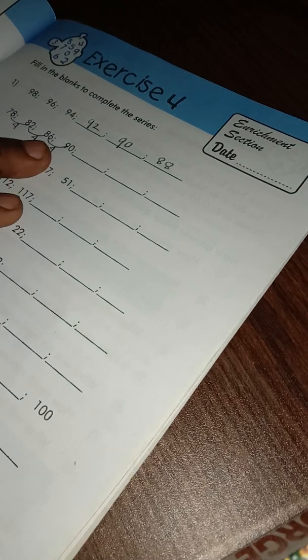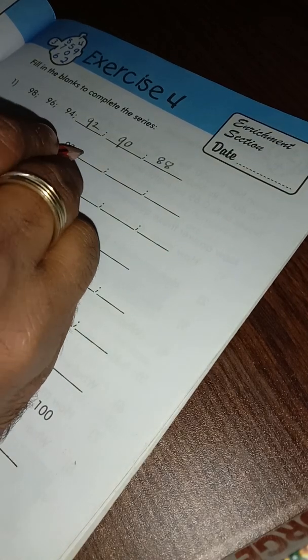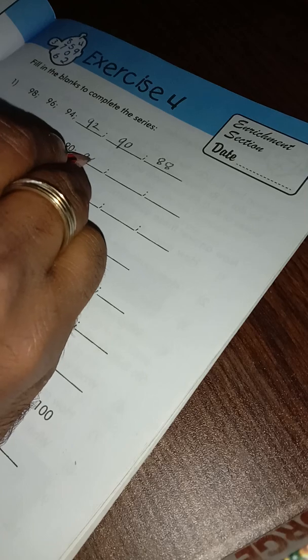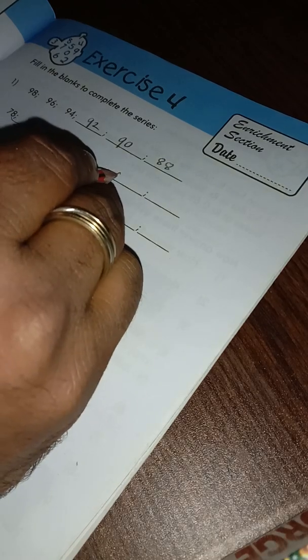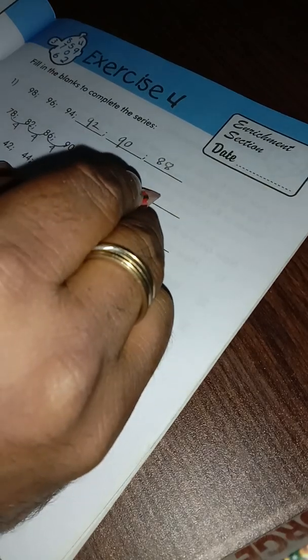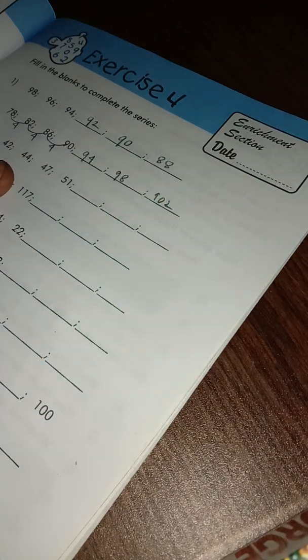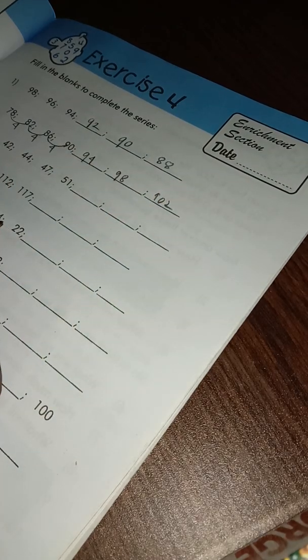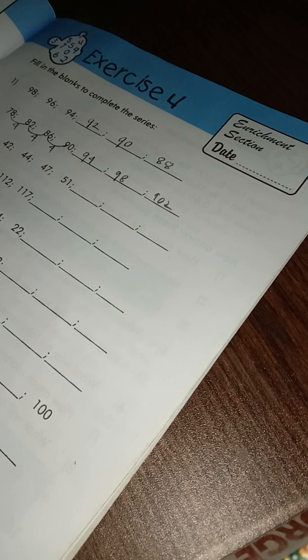Next series is 94, then 98, then 102. Now 41, 42 is 1, 42, 44 is 2, 44, 47 is 3, 47, 51 is 4.